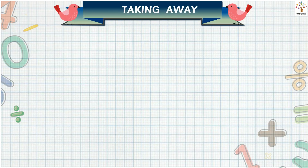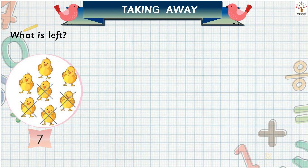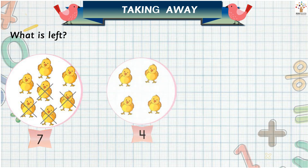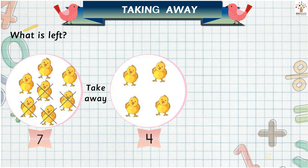Taking away: what is left? There are seven chickens, then we take away four chickens. Now how many chickens are left? Seven minus four is equal to three.